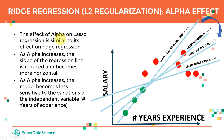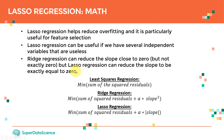Lasso regression has the same alpha parameter as ridge regression. As you increase alpha, the line becomes more horizontal and the model reduces its sensitivity to changes in the independent variable. As alpha increases, the model becomes less sensitive to variations in the independent variable — for example, the number of years of experience.